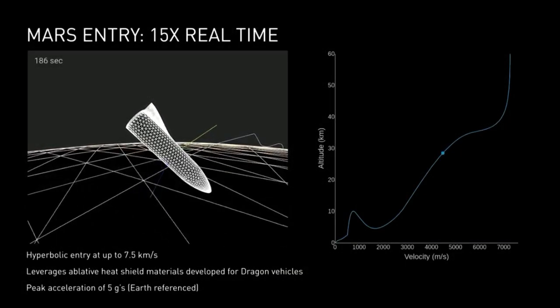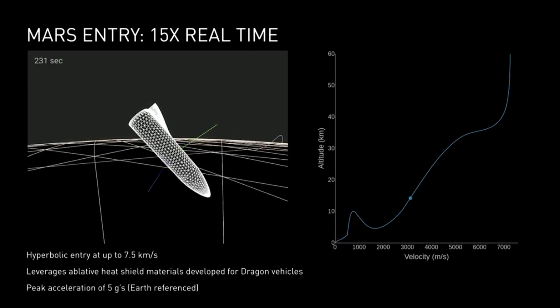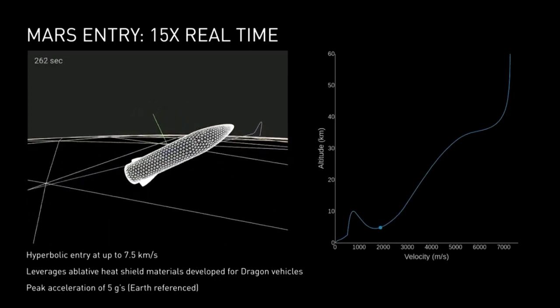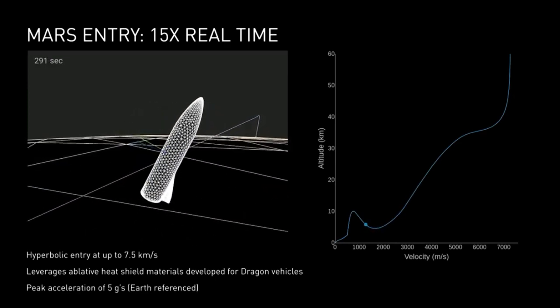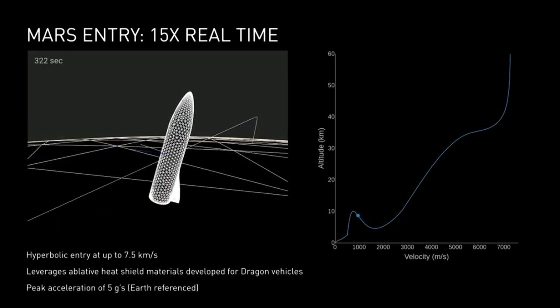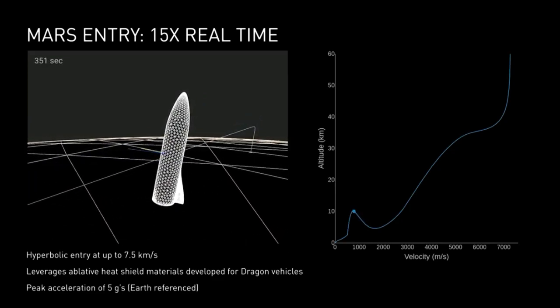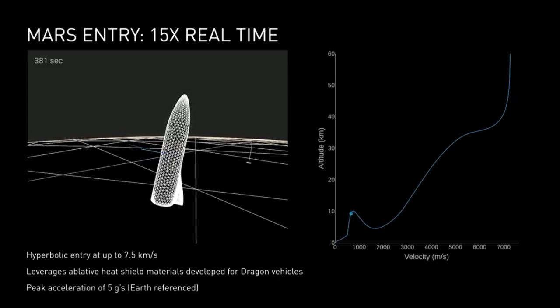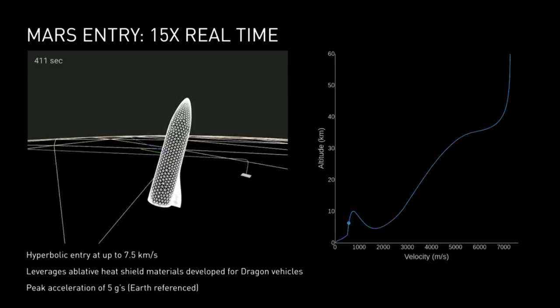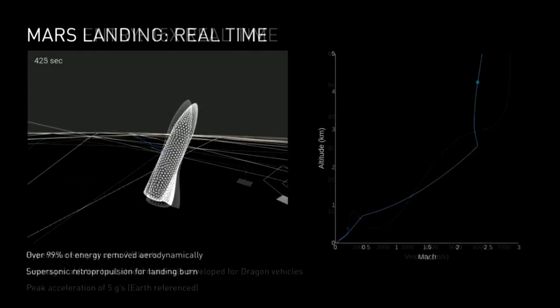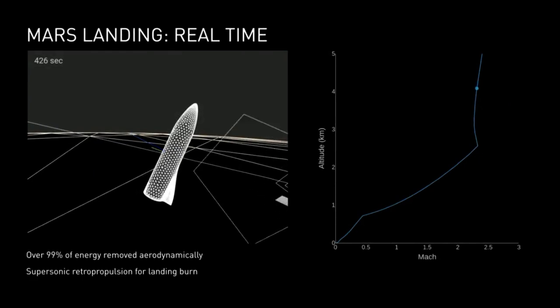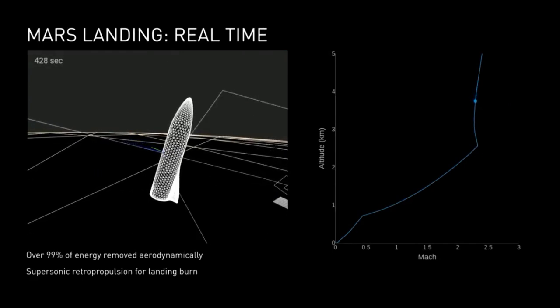You come in, you're entering very quickly, going seven and a half kilometers a second. For Mars, there will be some ablation of the heat shield. It's just like a brake pad wearing away. It is a multi-use heat shield, but unlike for Earth operations, it's coming in hot enough that you will see some wear of the heat shield.